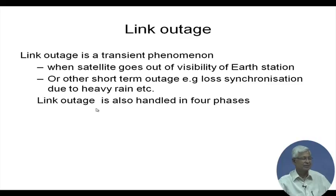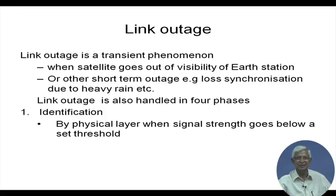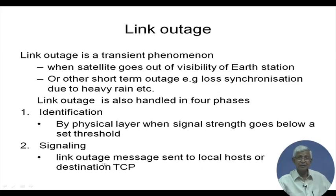The physical layer identifies link outage when signal strength drops below a threshold and synchronization is lost. Once detected, it sends a link outage message — slightly different from a corruption-experienced message — to the local host or destination, because the link is out on the forward side.